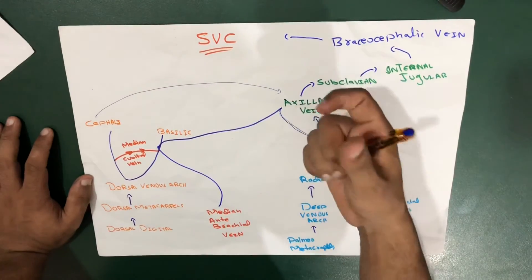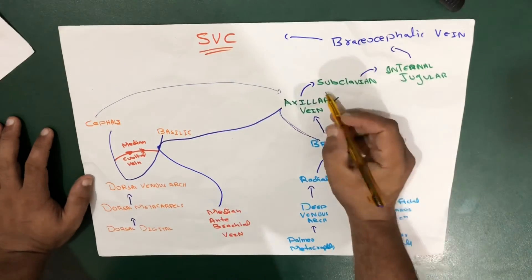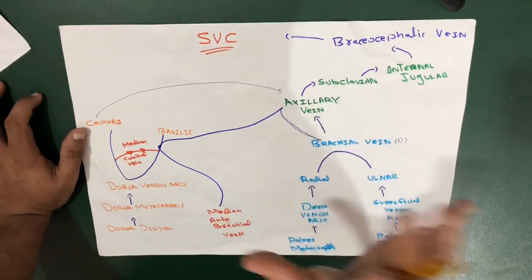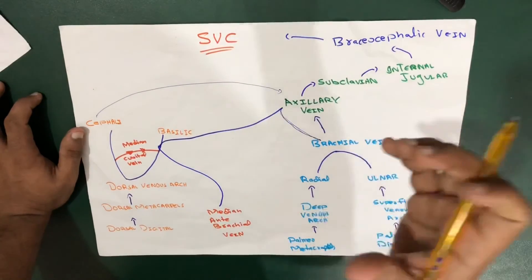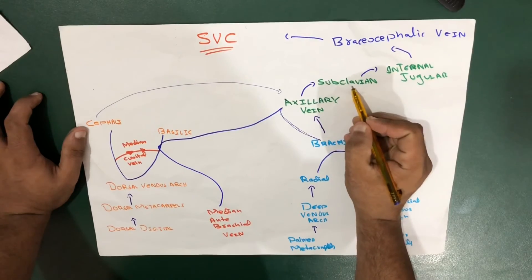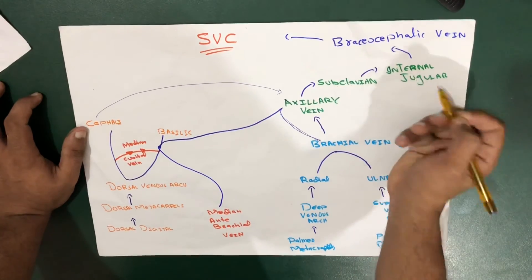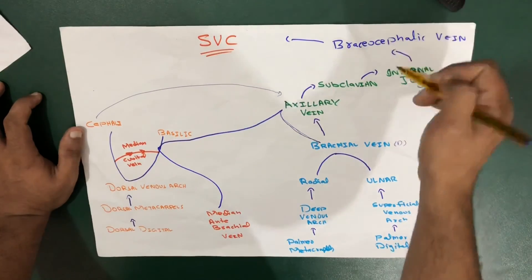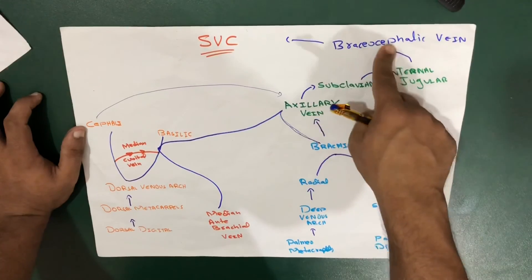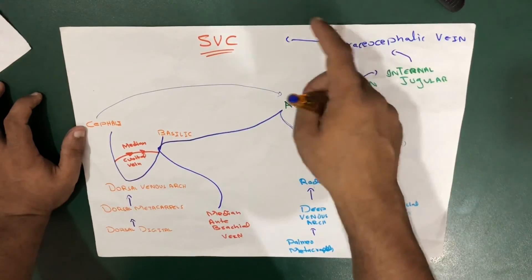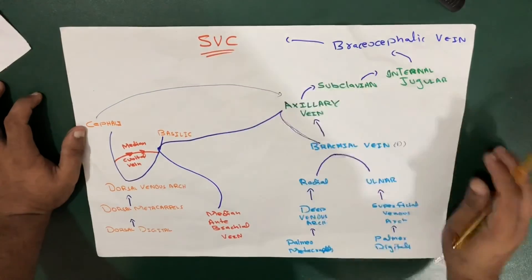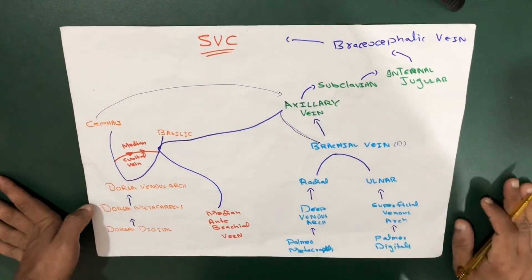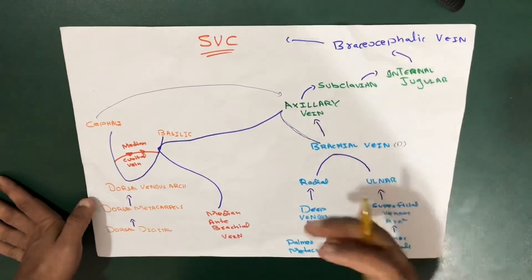The axillary vein is located in the axilla. When it crosses the first rib, its name changes to the subclavian vein. The subclavian vein then changes its name to join with the internal jugular vein to form the brachiocephalic vein, and the brachiocephalic vein finally drains into the superior vena cava. That's the complete upper limb venous drainage — simple and easy.